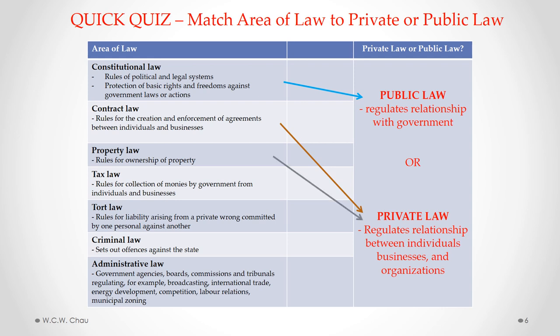Property law is also considered to be private law — it contains the rules that regulate the ownership of property. Tax law is considered to be public law, covering rules regarding the collection of money by government from individuals and businesses, such as when to file a tax return and how much tax to pay. Tort law covers the rules that determine liability arising from a private wrong committed by one person against another, and tort law is considered to be private law.